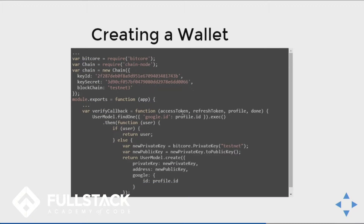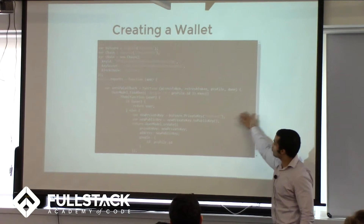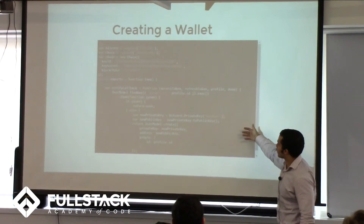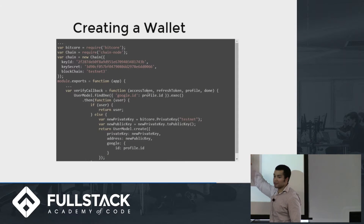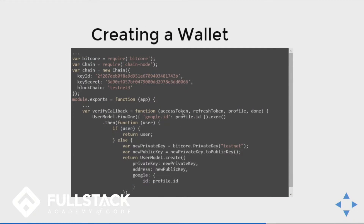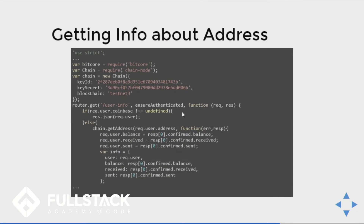There's also a library called BitCore, which is used to create public and private keys — it doesn't let you interact with the chain directly, but it lets you create public and private keys. Then you have Chain: you create a new chain instance with your ID and secret. Right here is where you're creating your addresses — using FSG to create a callback on a Google sign-in. Whenever someone signs in with Google, you assign a private key and an address to that user. Now your user has a private key and a public key. Chain lets you take information about that public address and give you things like a balance and how much they've received.